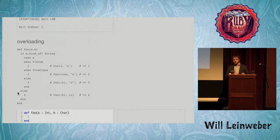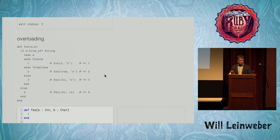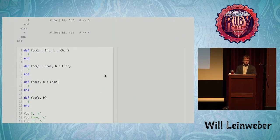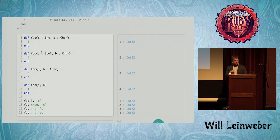Another cool thing you can do is method overloading. This is a contrived example, but it's not unlike some methods in ActiveRecord which split off the arguments you give it and do some assertions. What's cool in Crystal is if you do want to say the types, you can — and then it knows which method to call at compile time.